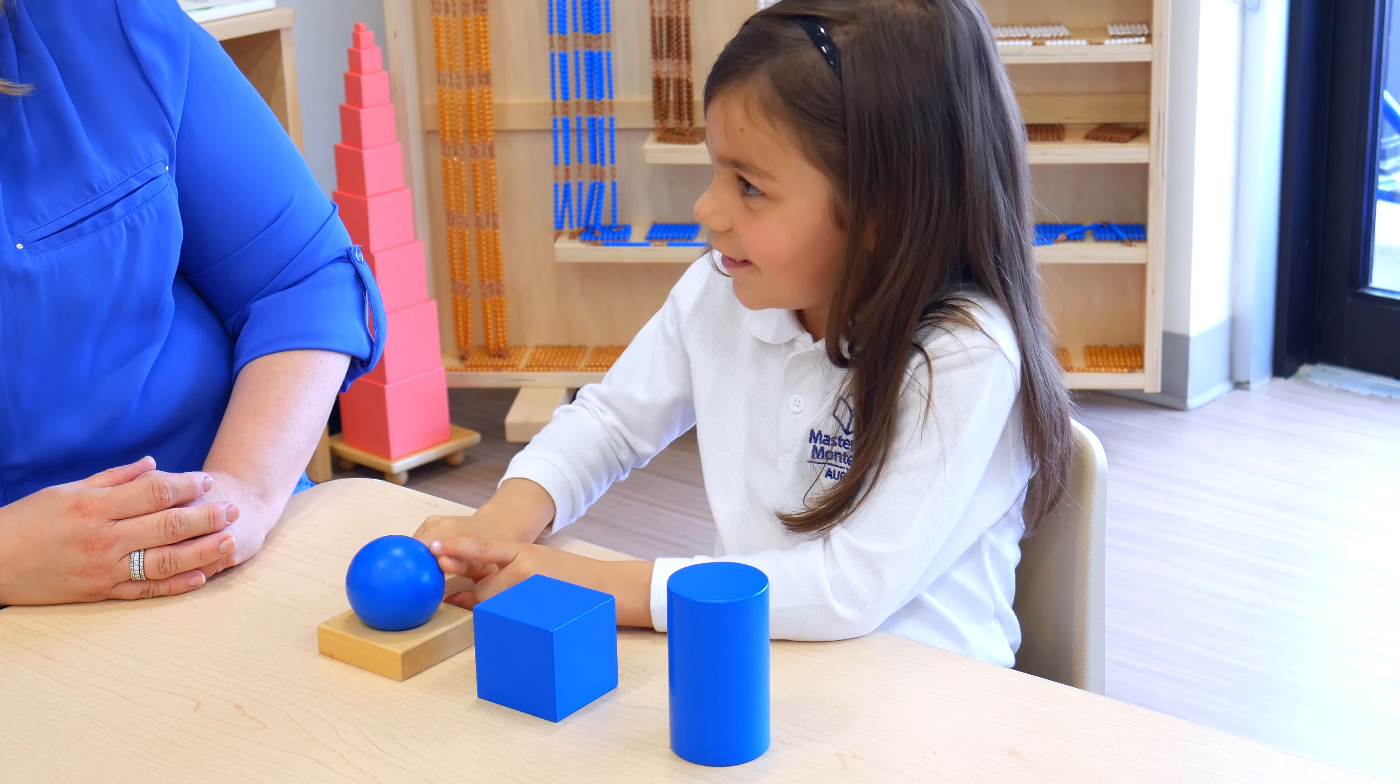Can you show me the cube? Good. Can you show me the cylinder? Great. Can you put the cylinder right here? The cylinder, it looks like a little can. That's right. Can you put the sphere over there? Great job. Can you put the cube right here? Can you put the sphere right there?